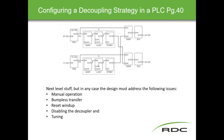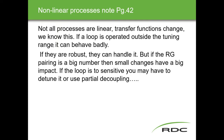Other design provisions include disabling the decoupler — turning it on and off, usually combined with the auto/manual setup — and tuning values calculated and put into the blocks. On non-linear processes: we talk about things theoretically being linear because it's easier, but very few processes actually are. Transfer functions change. A loop operated outside its tuning range can behave badly, which is why we always tune at the output level we'll typically be running at. If the relative gain pairing is a big number, small changes will have a big impact.